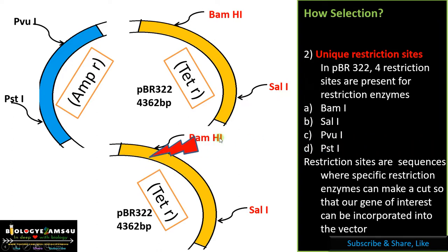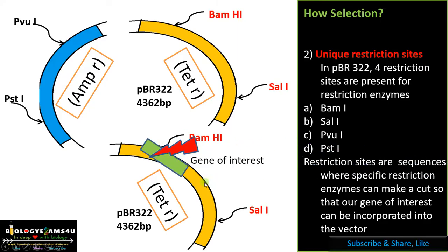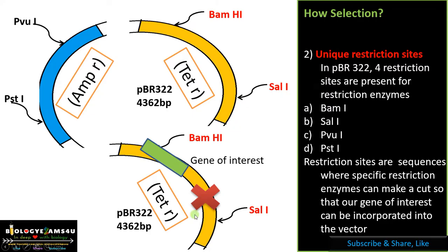We make a cut using BamHI and then insert our gene of interest. Once the gene of interest is inserted into the tetracycline gene sequence, that gene is no more functional. This is called insertional inactivation — the inactivation of a gene upon insertion of another gene within it. This disrupts the continuity of the tetracycline resistance gene sequence, making it non-functional, which helps in selection of recombinant colonies.